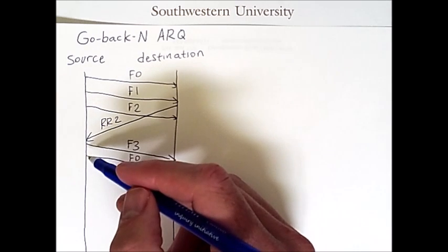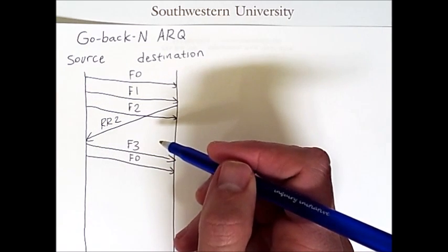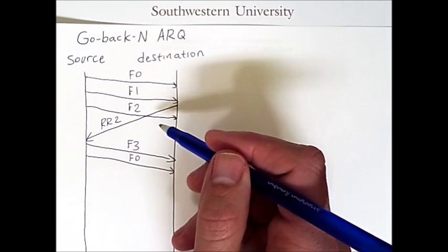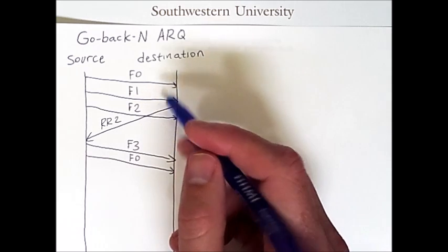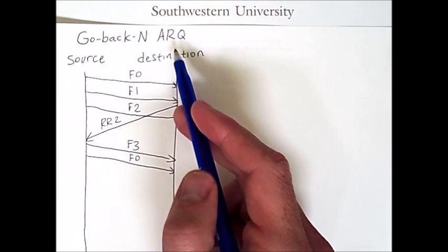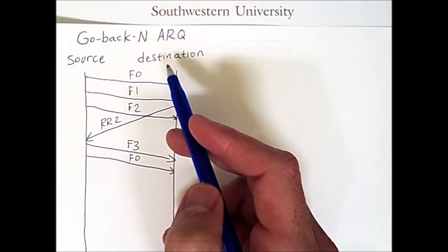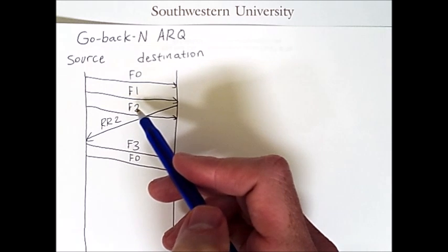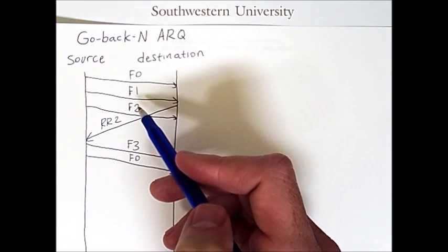So the source will stop if it needs to. The destination will periodically send ready-to-receive requests. But the whole point of the ARQ is to define how these systems will behave if frames are lost or garbled.